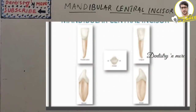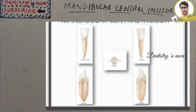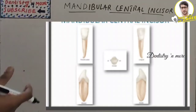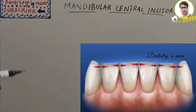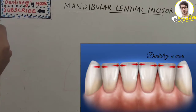Welcome back to another session in Dentistry and More. We are continuing our dental anatomy sessions. Today's session is about the mandibular central incisor. They are two in number — right and left — and the central incisor and lateral incisor are similar in anatomy and complement each other in function. They are smaller than the maxillary central incisors, and the mandibular central incisor erupts between the ages of seven to eight years.